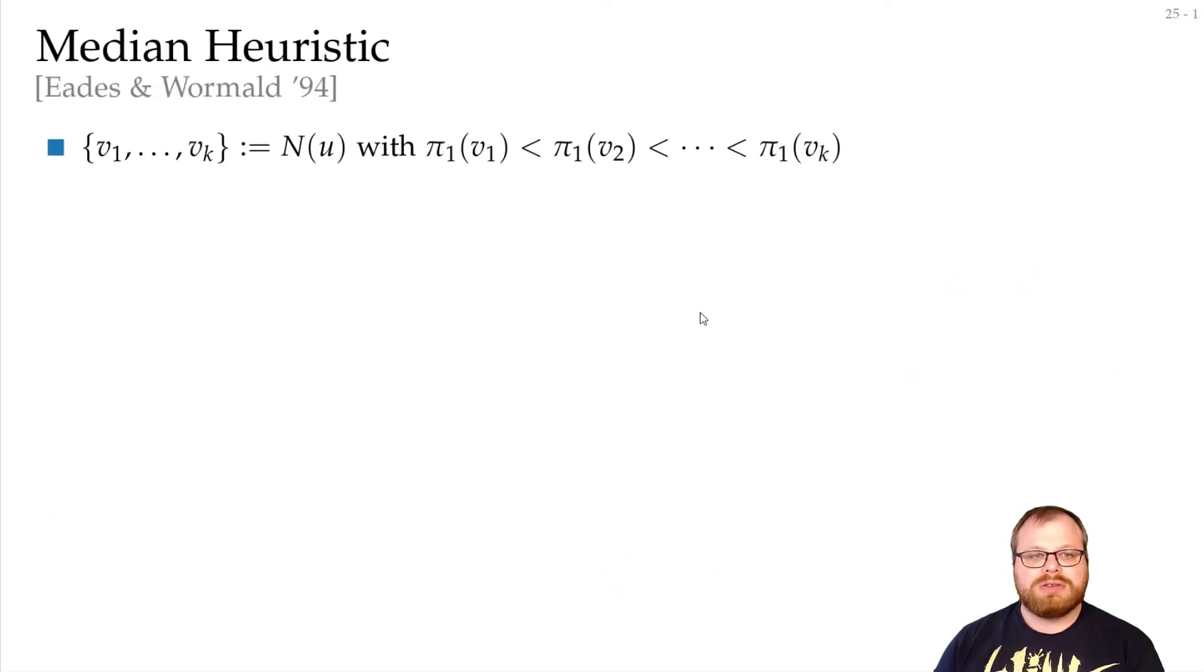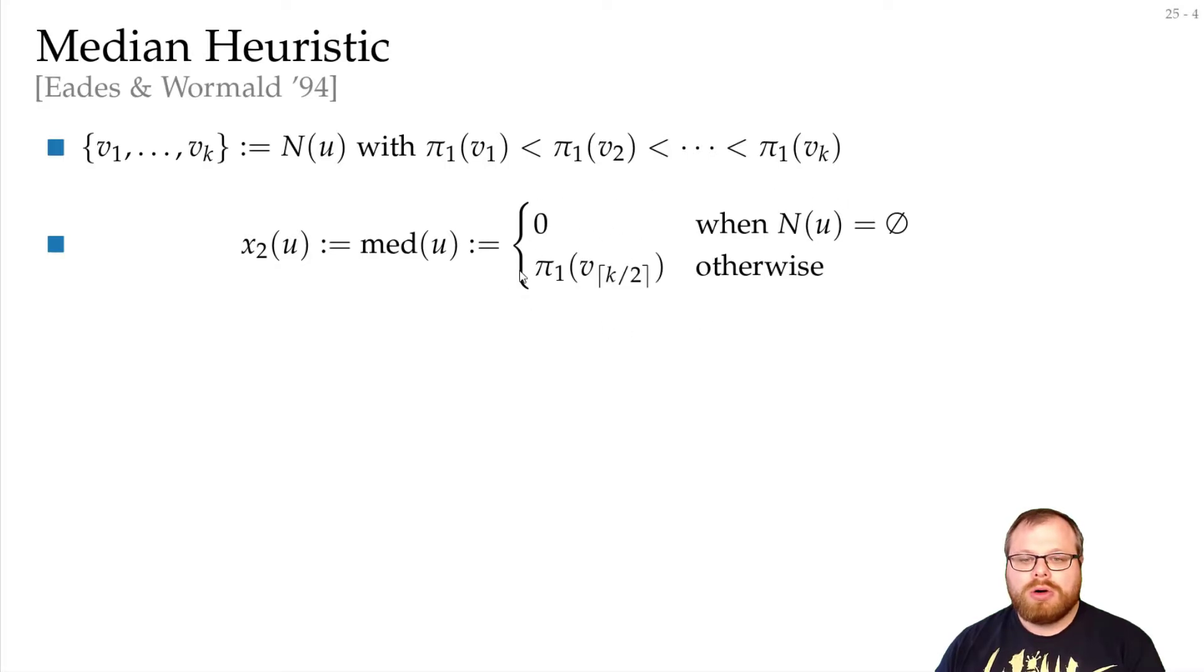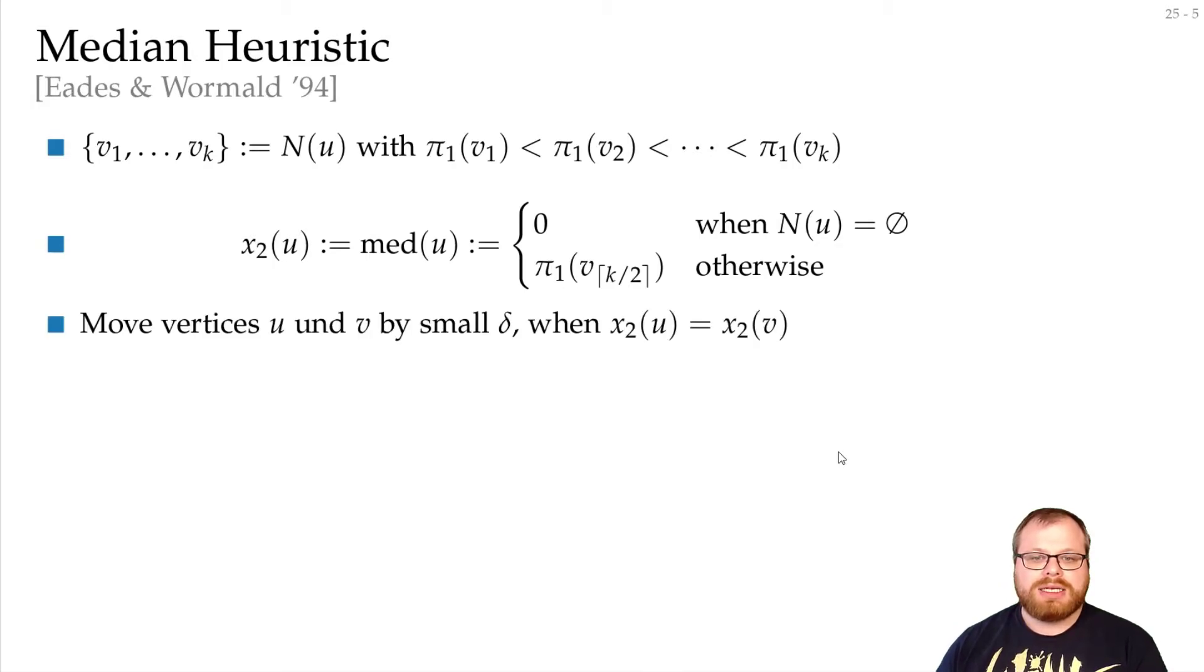The second heuristic, the median heuristic, was proposed by Eads and Wormald in 1994. Again, we look at the order that's fixed on layer 1. Now, instead of choosing the barycenter, we choose the median. The x-coordinate of some vertex u is 0 if it has no neighbors, or it's the median of all of its neighbors. If two vertices get the same position, we just offset it a little bit.